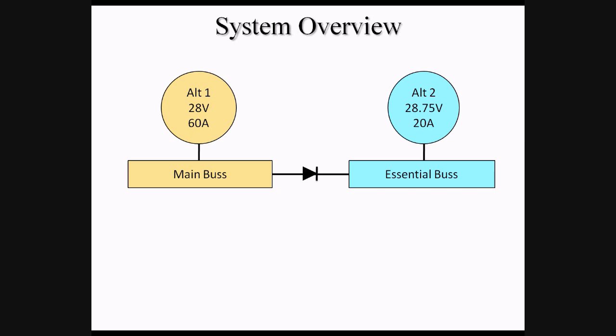In this case, electricity is able to flow from the main bus to the essential bus, but not vice versa. What this means is that Alt-1 is capable of powering both the main bus and the essential bus, while Alt-2 is prevented by the diode from ever powering the main bus.